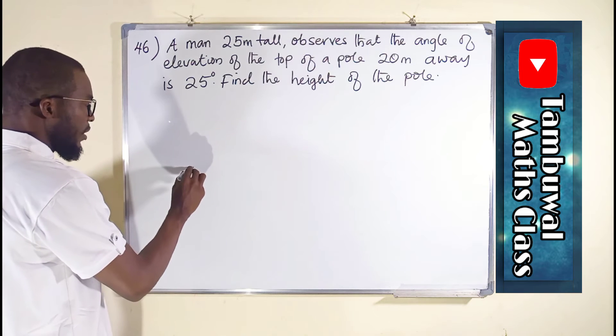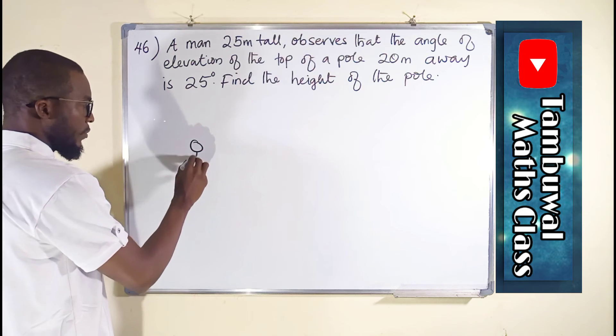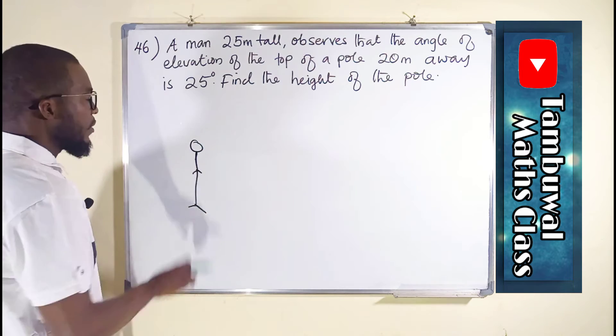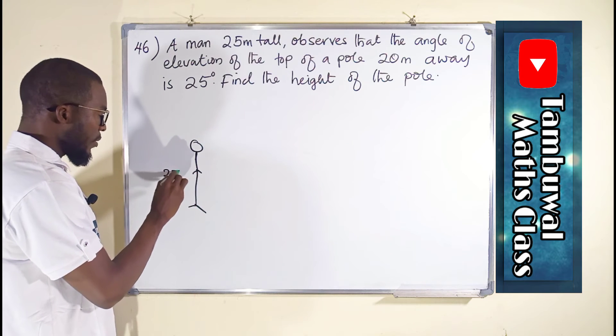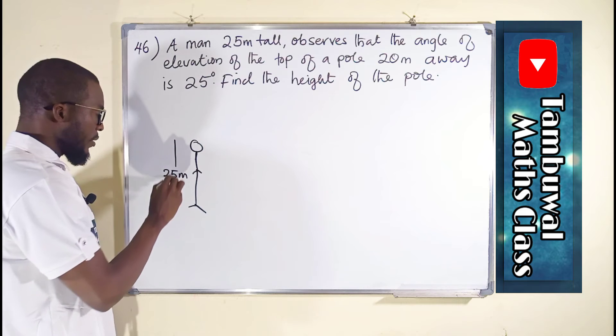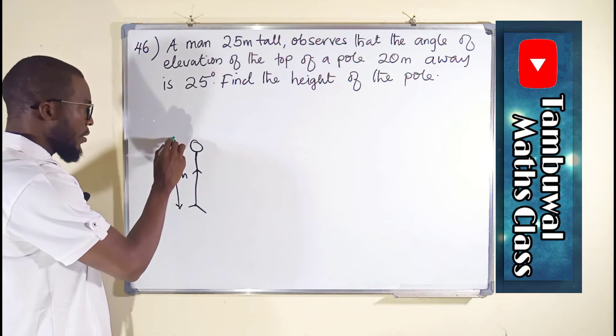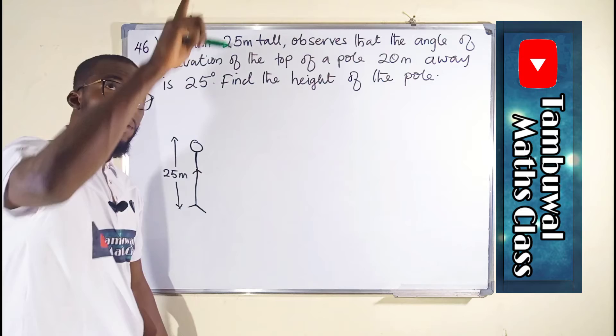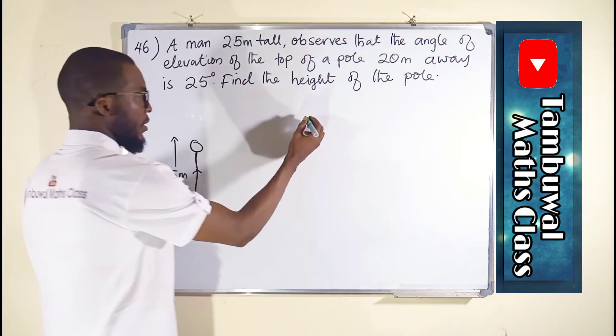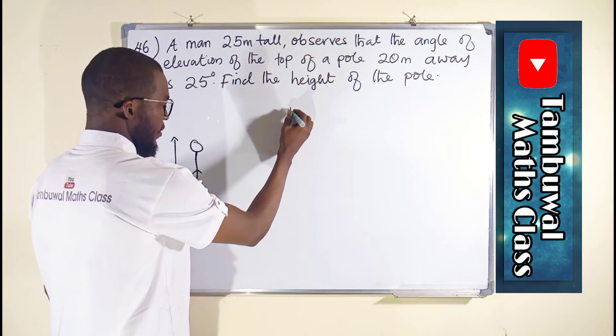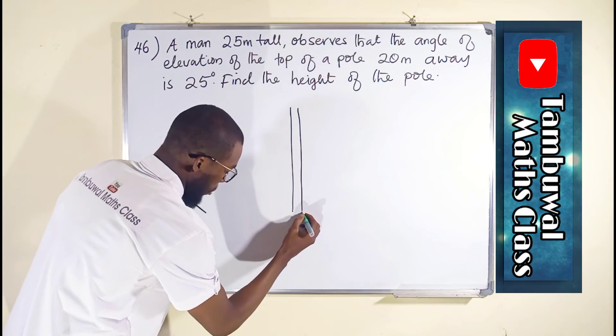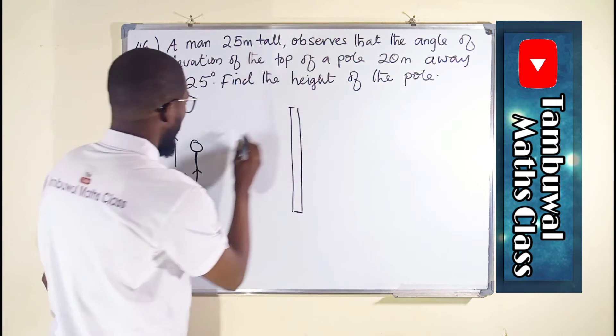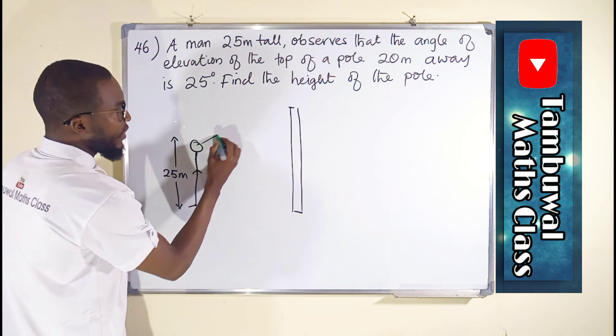A man, let me draw a man. The question says this man's height is 25 meter. He observes the top of a pole. Let me draw something like this from the same level. He observes the top of this pole.